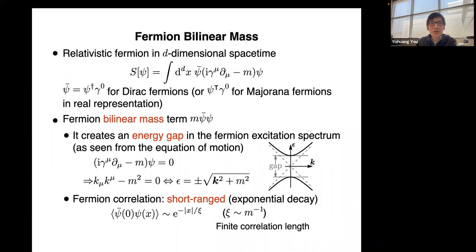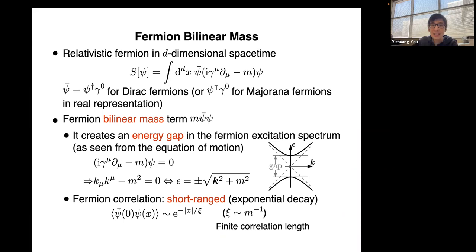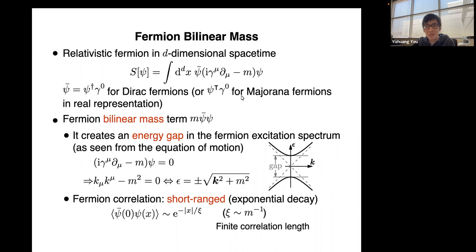Symmetric mass generation — what's that? We all know fermions can have mass, and symmetric mass generation is a novel way to give fermions a mass. Before talking about this novel mass, let's first review what we know about fermion mass. The most conventional way to give mass to fermions is called fermion bilinear mass. Consider relativistic fermions in D-dimensional spacetime, where the action of the fermion field can be written as a bilinear form.